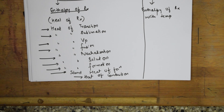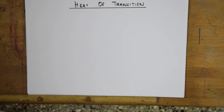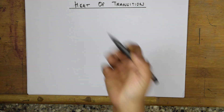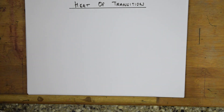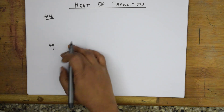Let us start with the first type — heat of transition, or enthalpy of transition. I will take examples first and then go to the definition. I have taken carbon, which exists in allotropic forms: diamond, graphite, and Buckminster Fullerene. Here, C diamond is getting converted to C amorphous.